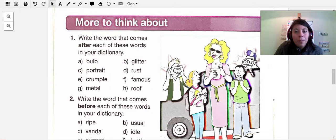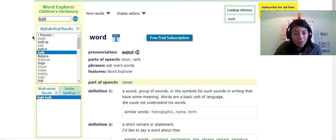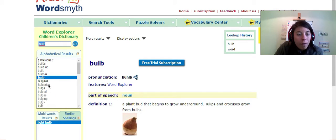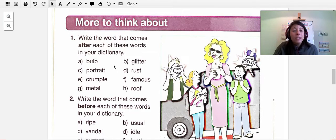So what you're going to do is look up the words. It says bulb. It says write the word that comes after. So I look up the word bulb, B-U-L-B, and I press my enter key. So here should show up the word in the alphabet. And what's the next word? Bulgaria. So you're going to write Bulgaria here. Now I have to tell you, this varies depending on the dictionary that you use, so you don't have to have all the same answer.